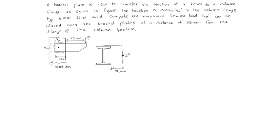Now first we will find x̄. But before that, we find the effective throat thickness. Size of weld = 6 mm. Throat thickness = 0.7 × 6 = 4.2 mm.